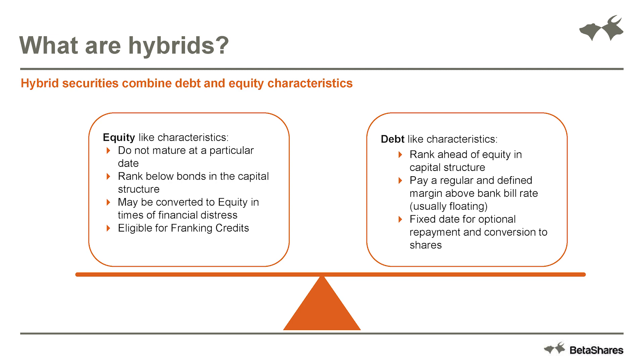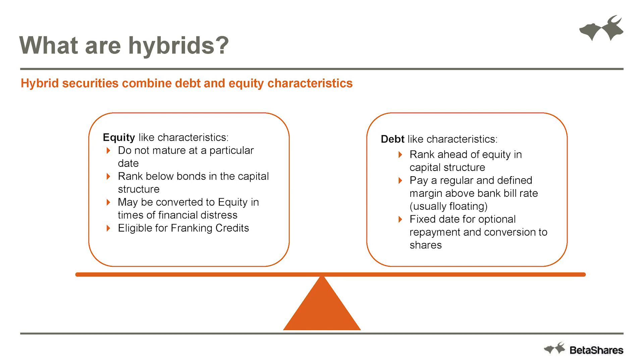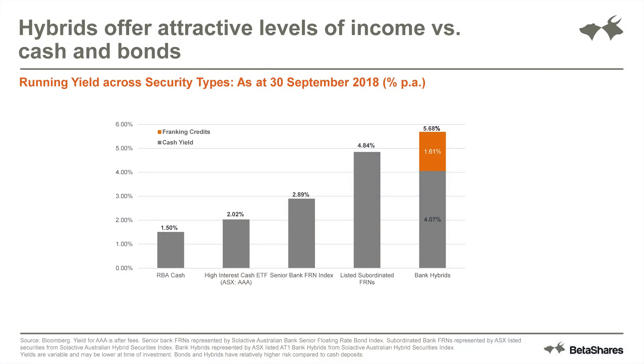Hybrids have some equity-like benefits such as franking credits. On the debt side, hybrids rank above equity — so an equity holder experiences a loss in a wind-up sooner than a hybrid security holder. They pay a regular and defined income stream, normally linked to a floating rate benchmark such as the bank bill swap rate, and they have a fixed date for optional repayment and conversion to shares. When we look at where hybrids sit in terms of yield, they carry quite attractive gross yield characteristics relative to bonds. Comparing across the RBA cash rate, high interest cash ETF, floating rate notes, subordinated notes, and through to hybrids — income from hybrids is comparable to equities and likely higher on a gross basis when including franking credits.